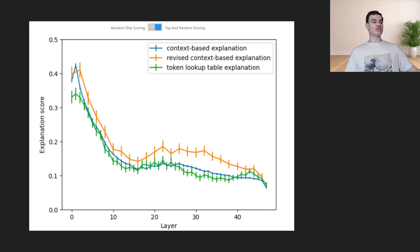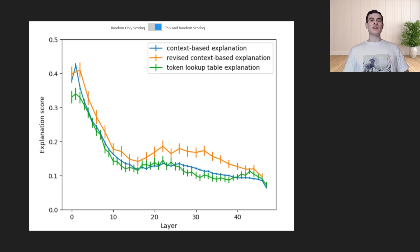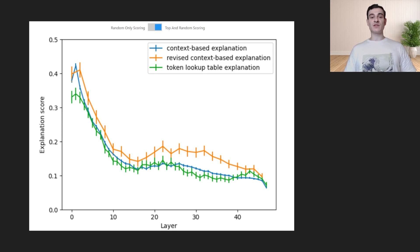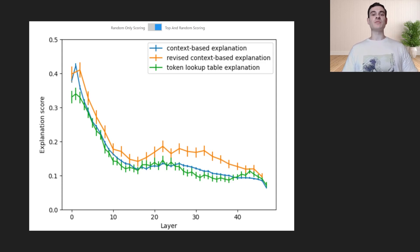Here's a graph comparing the token lookup table explanation, the context-based explanation, and the revised context-based explanation. It's interesting to note that the token lookup table and the context-based explanation perform about the same, which would indicate that a token lookup table provides just as much information as this whole natural language hypothesis workflow. But when you give it a chance to reflect on itself, it improves across the board. It would be really interesting to see other research papers build on top of this incrementally for better and better model performance.